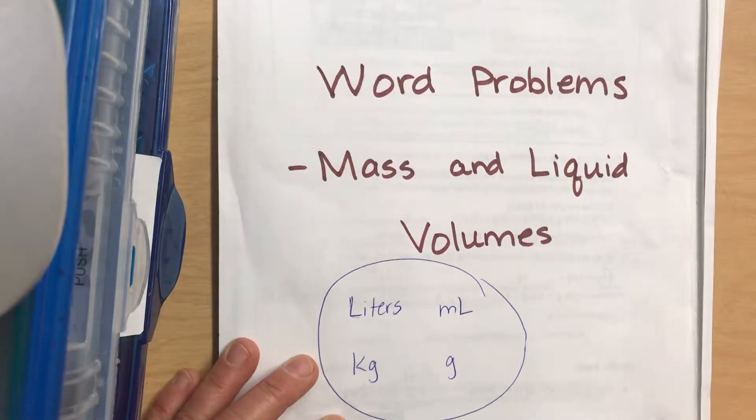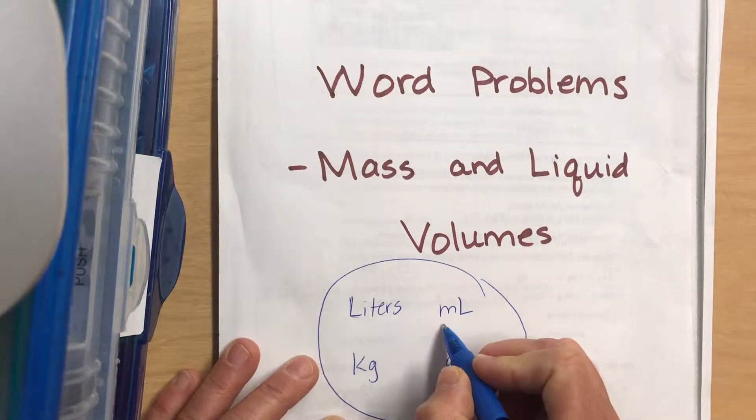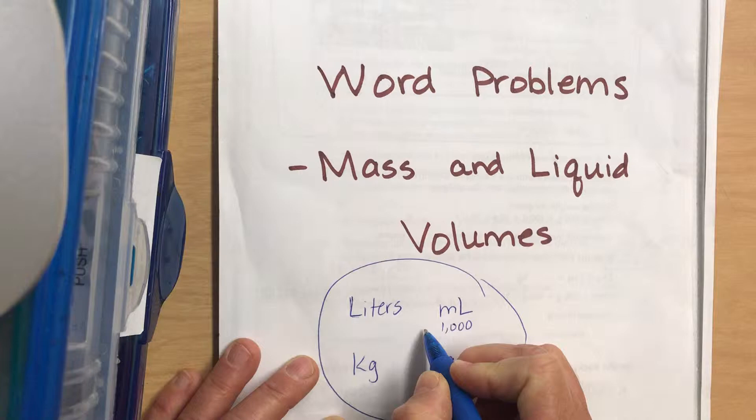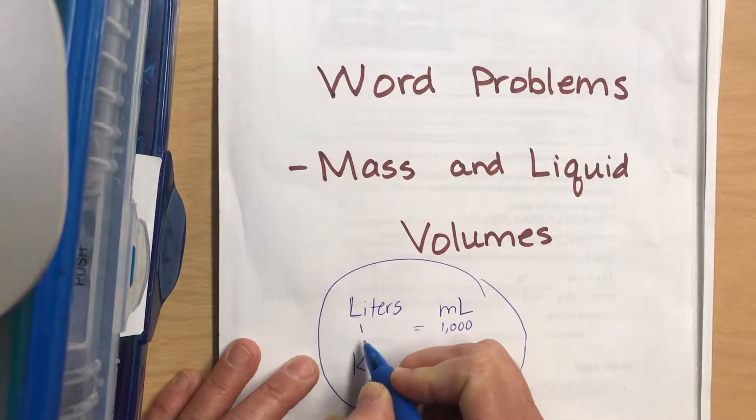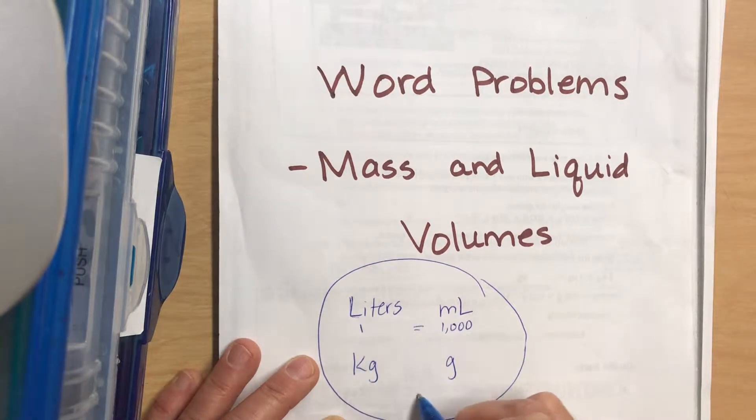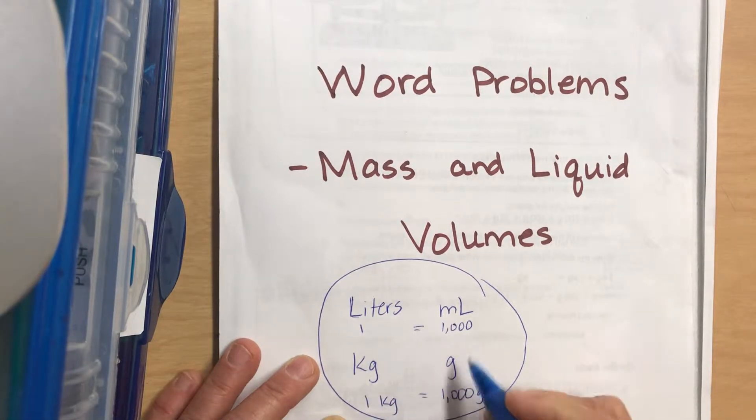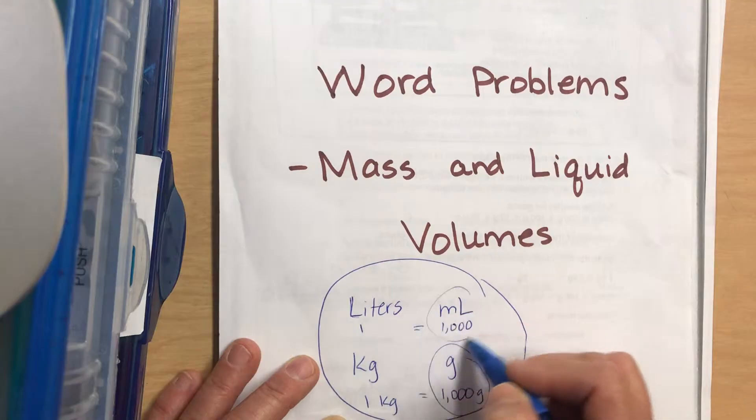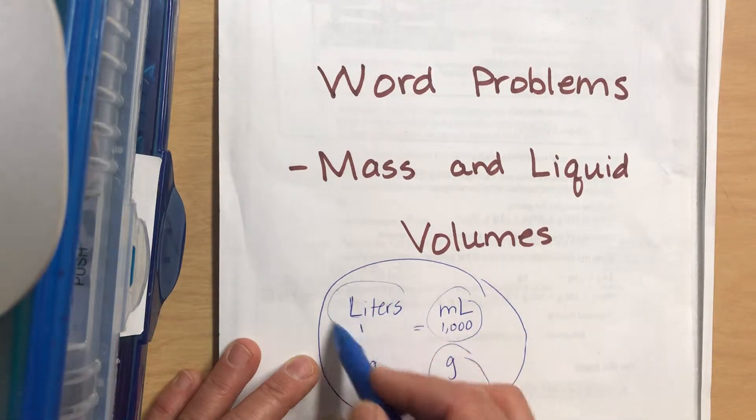We know that there's one thousand milliliters in one liter and one thousand grams in one kilogram. So grams are the smaller unit and milliliters are the smaller unit, and then liters are much bigger and kilograms are much bigger.